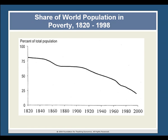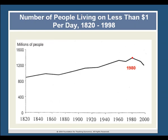Just because the percentage fell doesn't mean that we have less poverty — and for most of the last two centuries, that point would be well taken. As population grew, so did the total number of poor people, even as the percentage living in poverty declined. However, around 1980, the number of absolutely poor people — as defined by the $1 per person per day threshold — peaked at about 1.4 billion. By the turn of the 21st century, it had fallen to 1.2 billion, and in the last five years has declined by another 100 million, even as total world population has continued to grow.